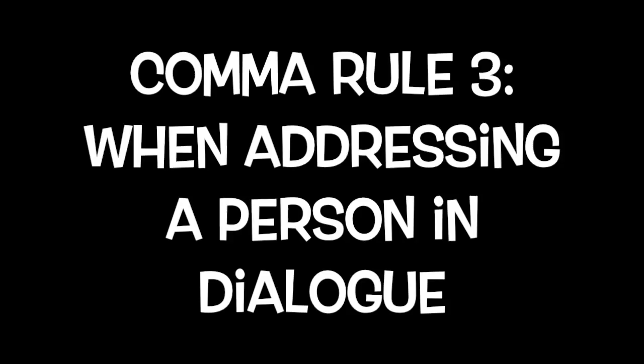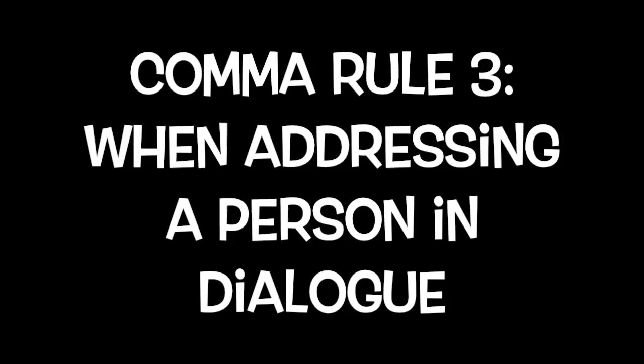Sup, Grandma. Let's eat, Grandma. How dare you say it to me — I'm your Grandma! What about this? Let's eat Grandma. When addressing a person in a dialogue, use a comma so you don't accidentally eat your Grandma.